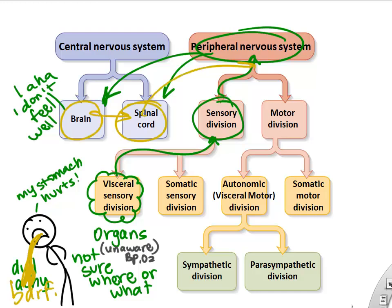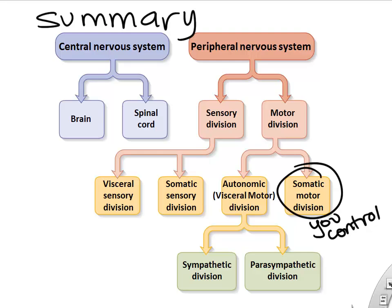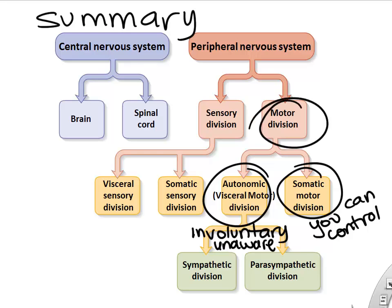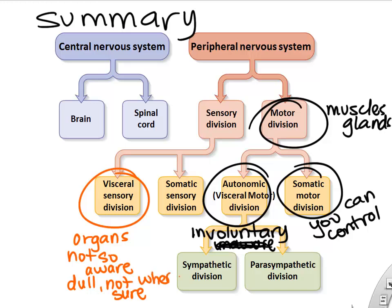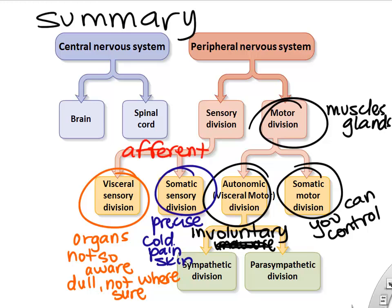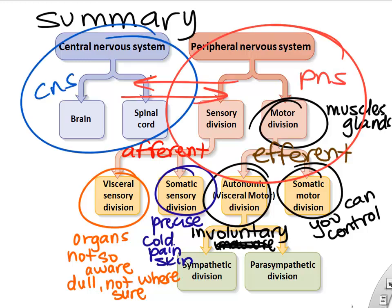If your brain wanted to make your stomach react to that pain, that would be through the motor division, specifically the autonomic. On the motor side, some signals go to voluntary things and some to involuntary. On the sensory side, visceral information from organs is less precise, while somatic sensory gives very precise information from skin and joints. We can also divide these as sensory with afferent and motor with efferent.